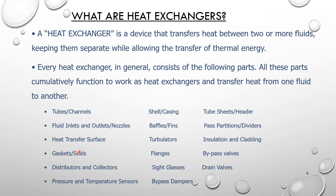Additional components include insulation and cladding, gaskets or seals, flanges, bypass valves, drain valves, sight glasses, bypass dampers, distributors and collectors, and pressure and temperature sensors. Every heat exchanger may not have all these components but may consist of some of them. In general, these are the components that every heat exchanger is composed of, and all these parts cumulatively help the heat exchanger perform its intended service.